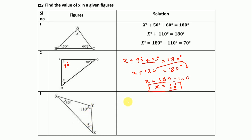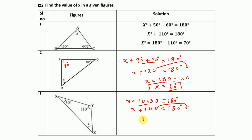In this figure: x + 110 + 30 = 180. Adding 110 and 30 gives 140. Taking 140 to the other side: x = 180 − 140 = 40. So the value of x is 40.